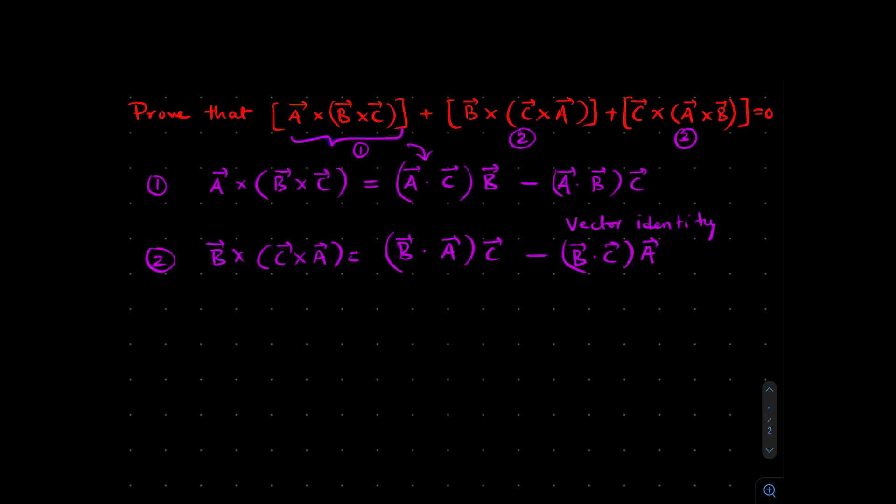Similarly, I can write for the third part C cross (A cross B). So that's going to become (C dot B) times A minus (C dot A) times B.